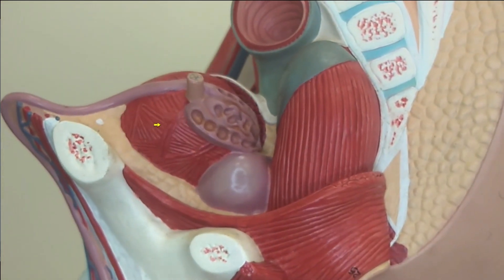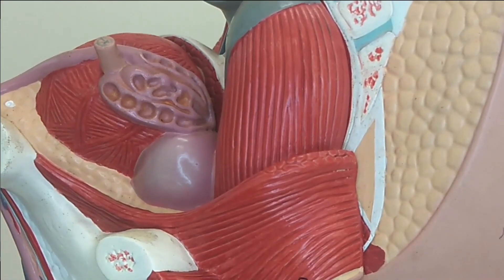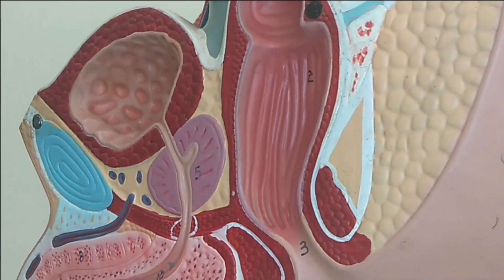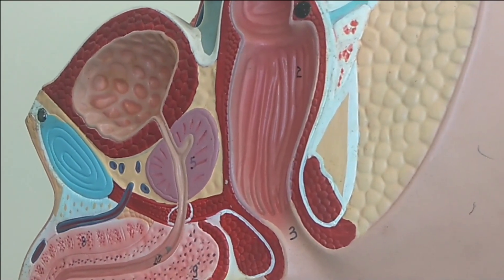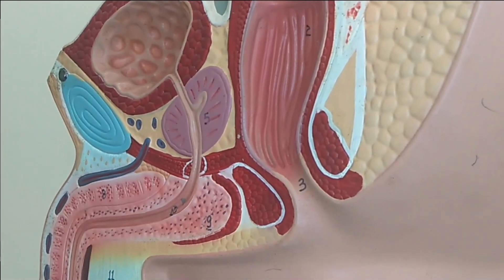You can see here, the seminiferous tubule is located at the back of the urinary bladder. Each vas deferens empties into the short ejaculatory duct which passes through the prostate gland and merges into the urethra.